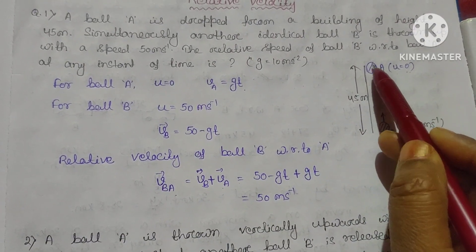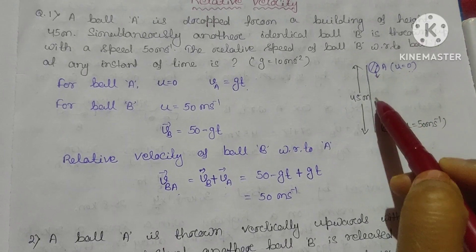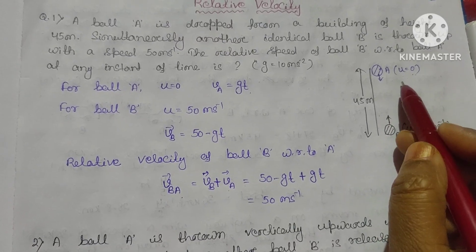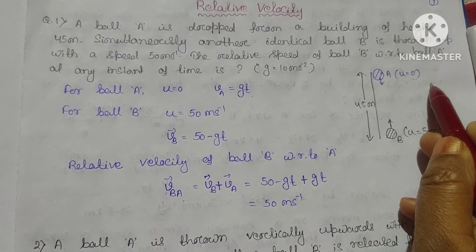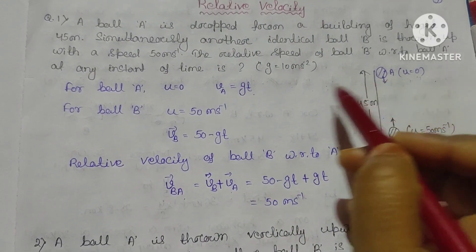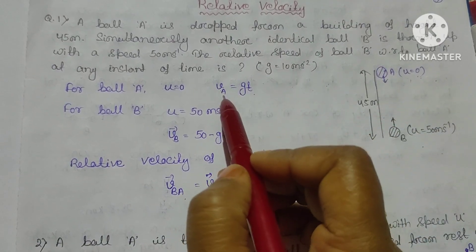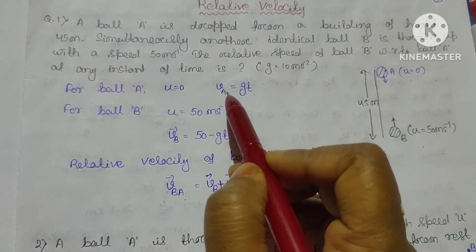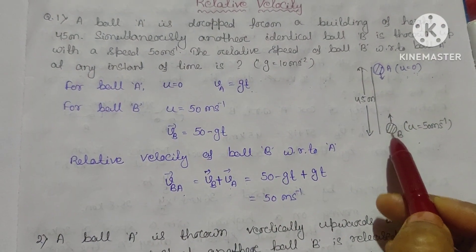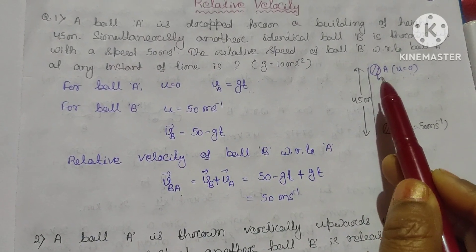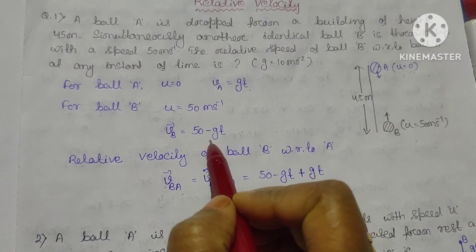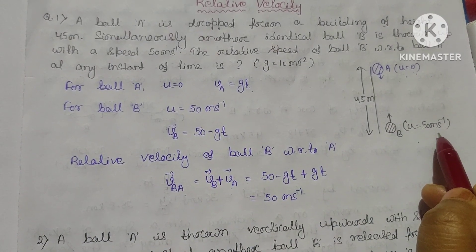Ball A is falling in the downward direction. Since gravity attracts every object downward, acceleration due to gravity G is taken as positive. Using V = U + at, where U = 0 for ball A, the velocity of ball A is VA = gt. For ball B, moving upward against gravity, G is negative and initial velocity is 50 m/s.